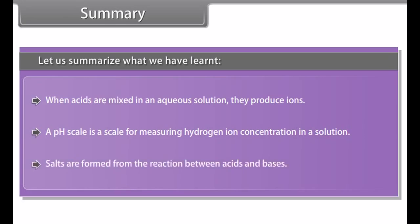Summary. Let us summarize what we have learnt. An acid is a substance that produces hydrogen ions when added to water, whereas a base is a substance that produces hydroxide ions when added to water. Olfactory indicators indicate whether a particular substance is an acid or base due to change in their smell. Every liquid you see will probably have either acidic or basic traits. All metals above hydrogen in the reactivity series react with dilute acids to form their respective salt and free hydrogen. Acids react with carbonates and hydrogen carbonates to form their respective salt, water and carbon dioxide. Acids and bases are the chemical opposites of each other. When acids are mixed in an aqueous solution, they produce ions. A pH scale is a scale for measuring hydrogen ion concentration in a solution. Salts are formed from the reaction between acids and bases.